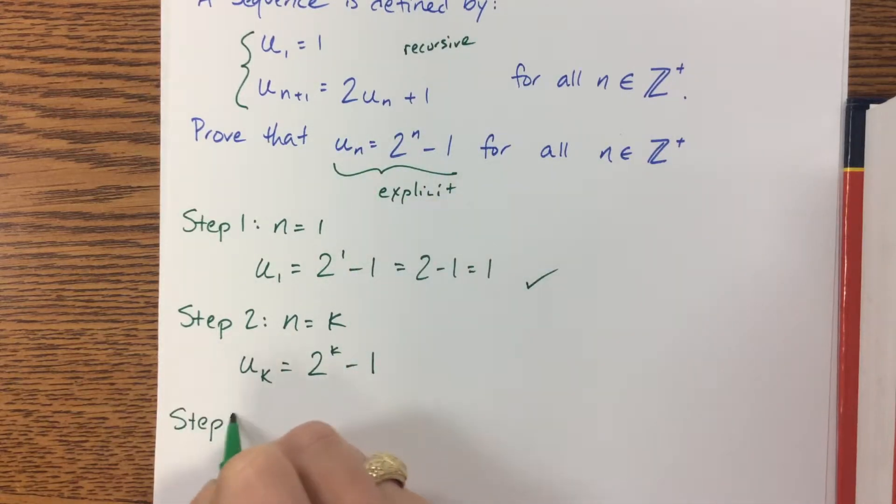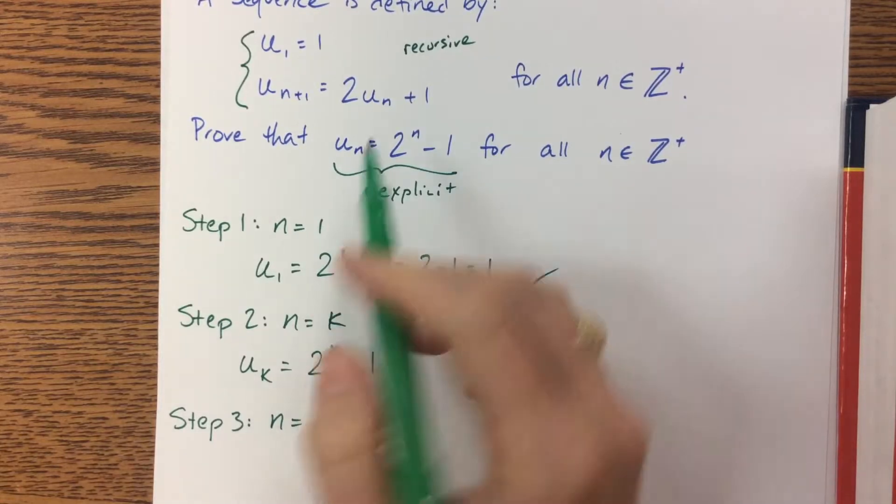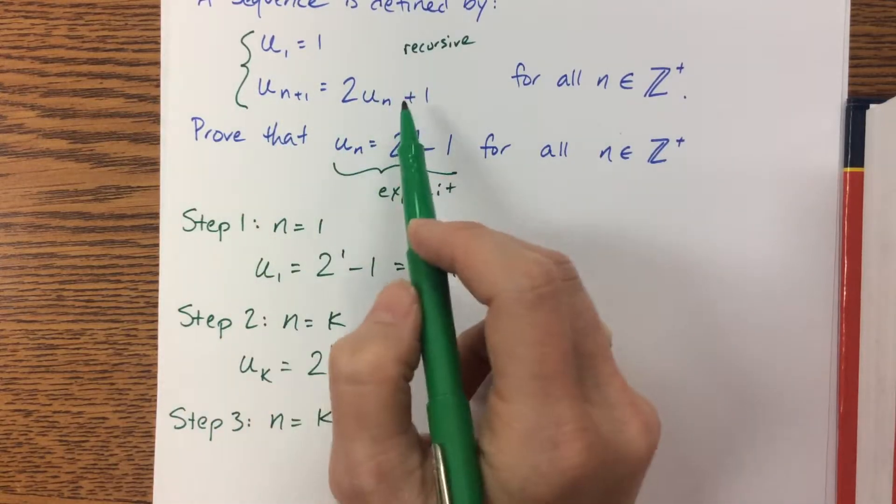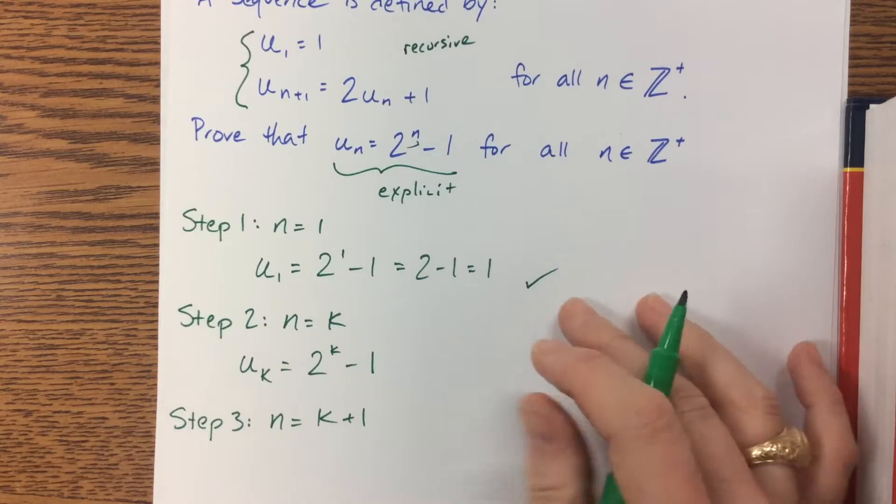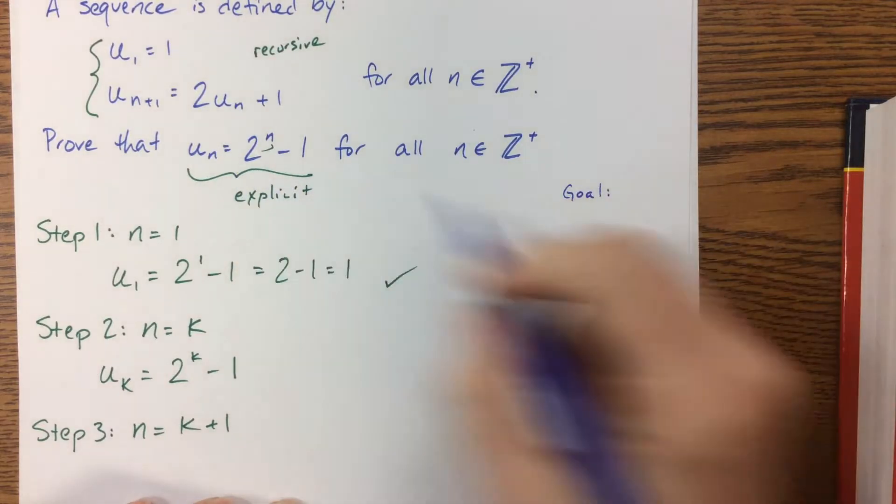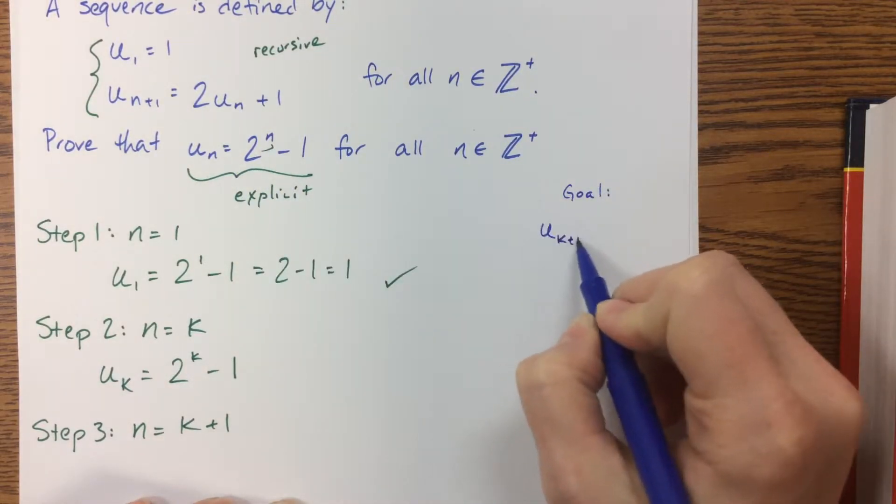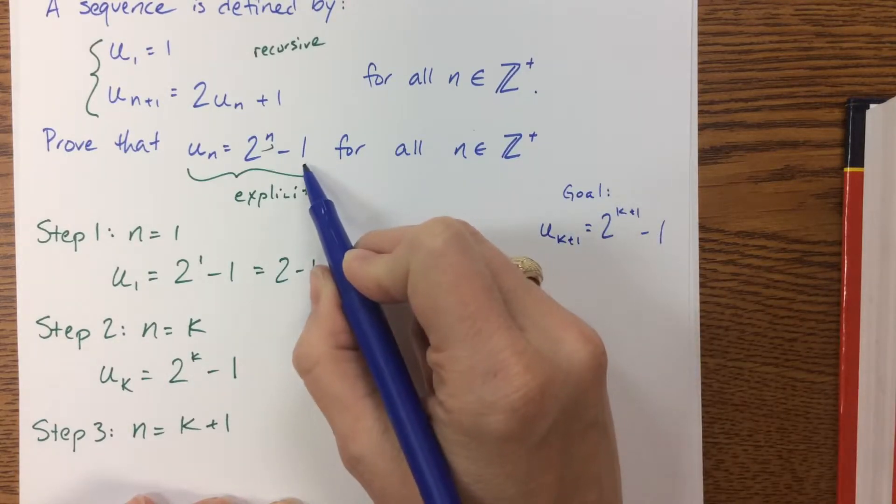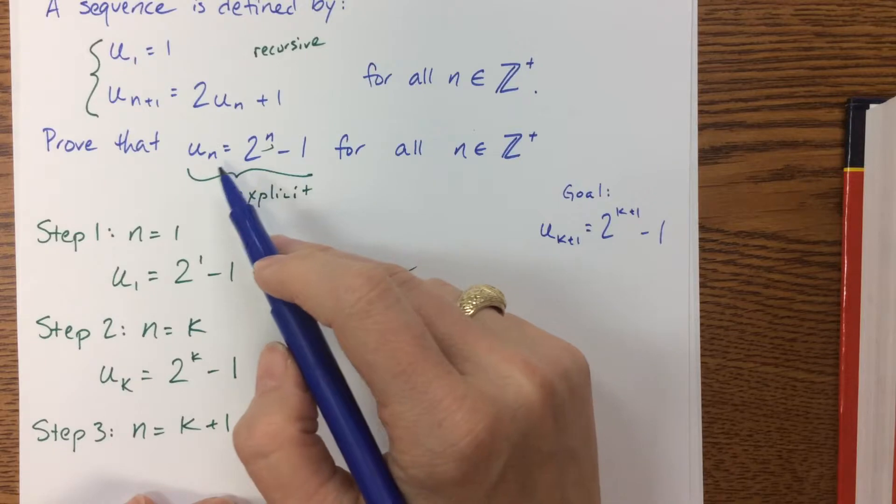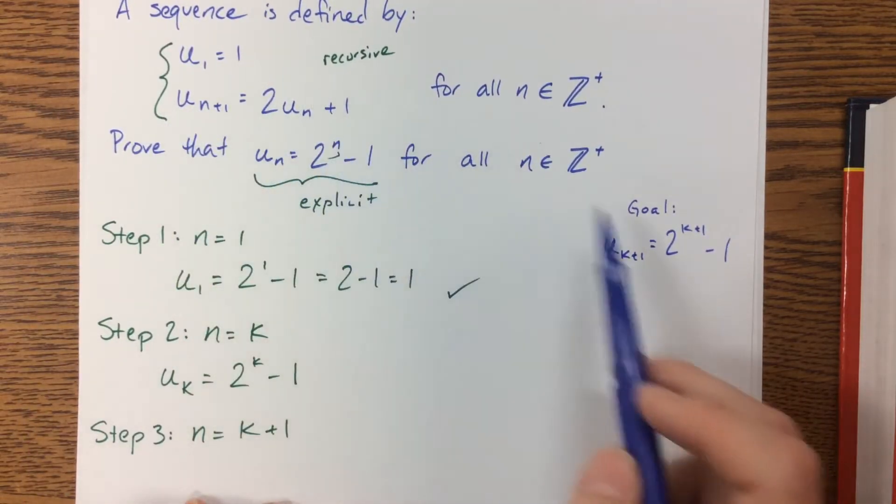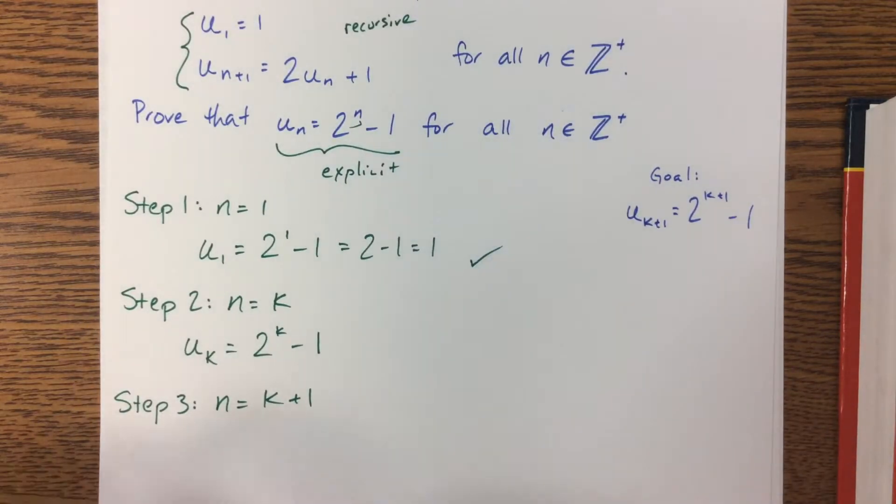Now, step 3, we need to verify that it's true for n = k+1. I have the recursive rule that I need to work with and manipulate. Sometimes I like to write a goal off to the side. My goal would be to show that u_(k+1) = 2^(k+1) - 1. So my goal is to make the explicit formula valid for when n = k+1, but I have to start with the recursive and manipulate this to get to my explicit goal.